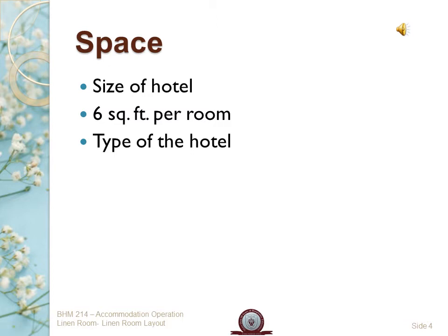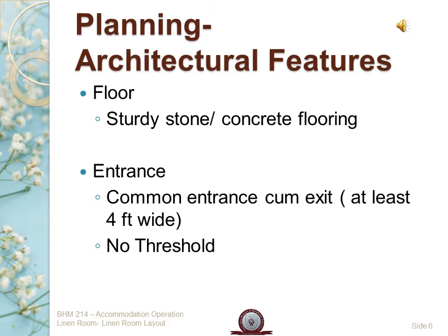Now that we have discussed space requirement and location, let's talk about architectural features such as the floor, entrance, ventilation system, ceiling, and walls. Starting with the floor: as they say, nothing can stand strong without a strong base. In a linen room, we need a sturdy floor made out of either stone or concrete. This is because there will be a lot of heavy linen trolleys — full of fresh or soiled linens — moving around, and we don't want the floor to get damaged.